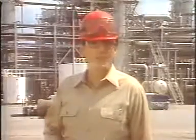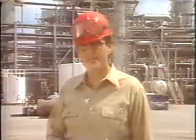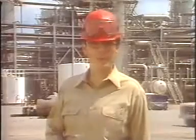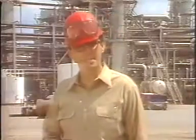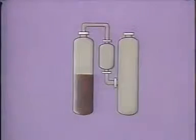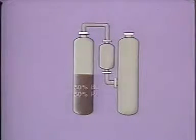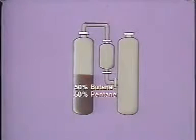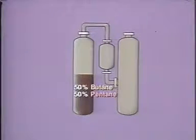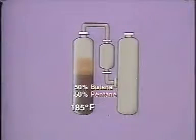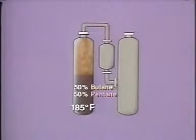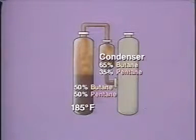One way to visualize what happens inside a distillation column is to follow the separation of a liquid mixture through a series of stills. Suppose our mixture is composed of 50% butane and 50% pentane, and we want to obtain a pure butane product. Butane boils at a lower temperature than pentane. So if we heat the mixture to say 185 degrees Fahrenheit, more butane will be vaporized and the condensed vapors will form a liquid that's enriched in the light component, butane.